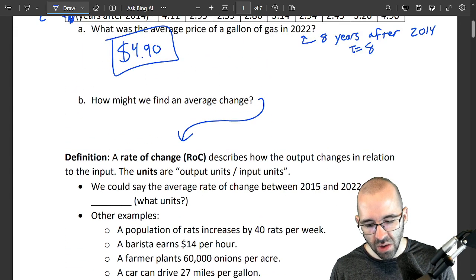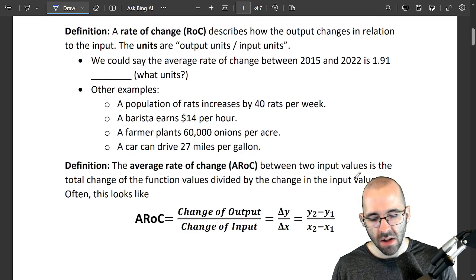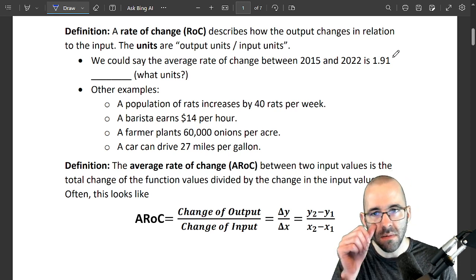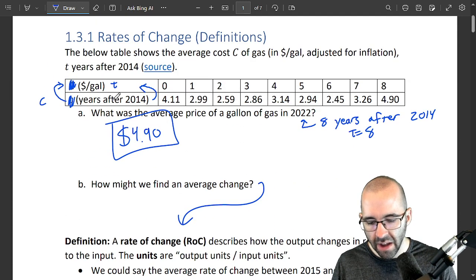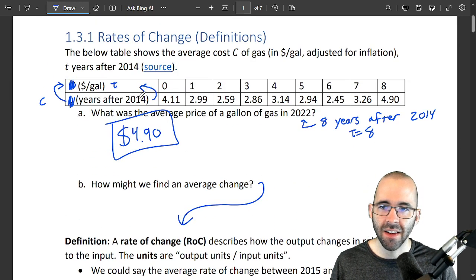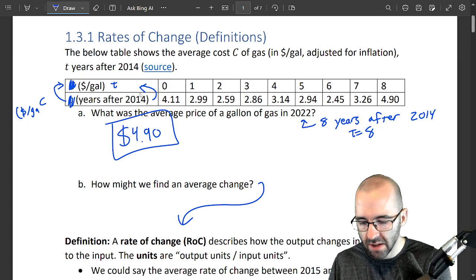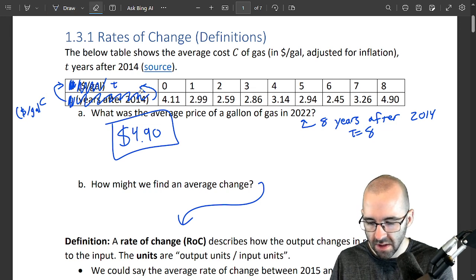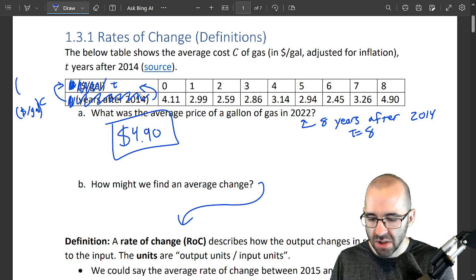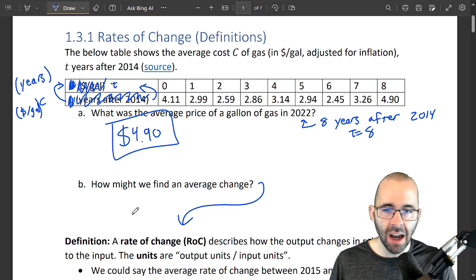So what would the units be? Well, the units are going to be the output units divided by the input units. What are the output units? I wish I fixed this table. The output units are the cost units, which is dollars per gallon. The input units is the time. Let me fix this—the time, which is going to be in years. The output units divided by input units is going to be dollars per gallon per year.